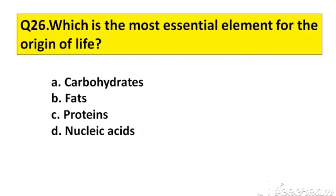Question number 26. Which is the most essential element for the origin of life? A. Carbohydrates, B. Fats, C. Proteins, D. Nucleic Acid. The right answer is option C, Proteins.